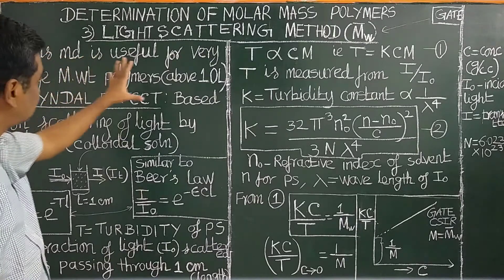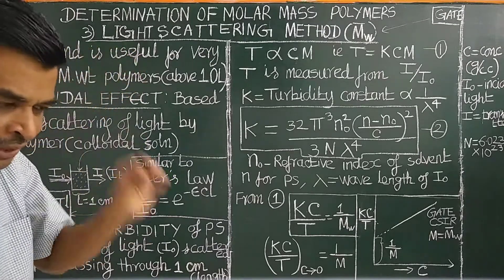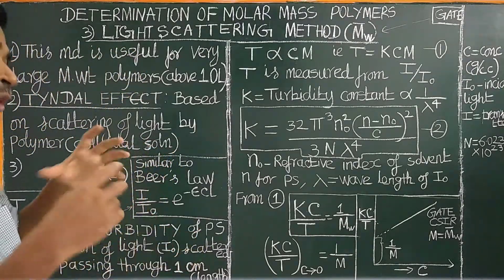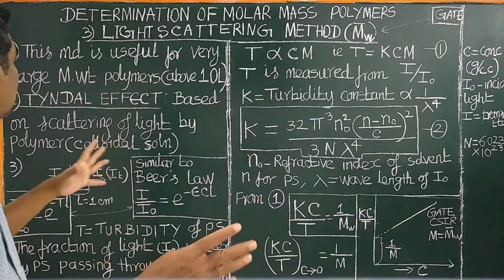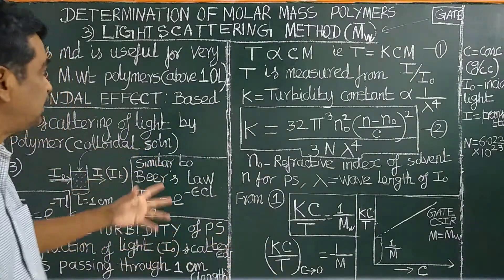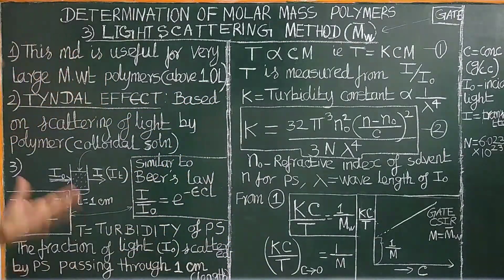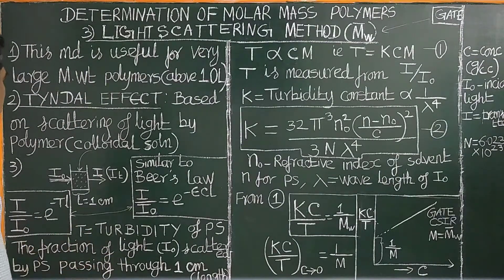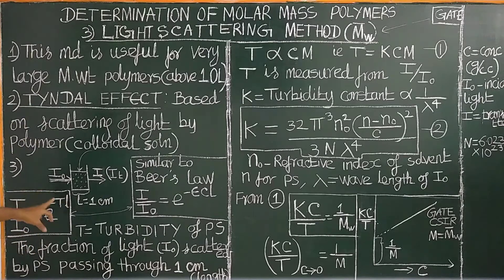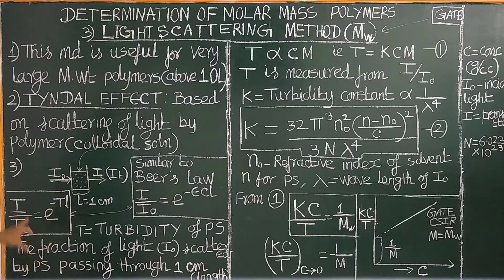This method is very useful only for large polymers with high molecular weight — that is, greater than 10 lakhs. Below 10 lakhs, this method is not applicable. This method is based on the equation: i/i₀ = e^(−τl).